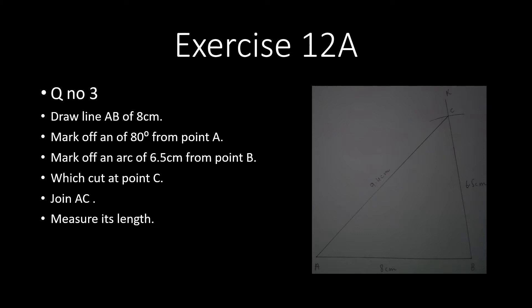Firstly, we have to draw a line AB of 8 centimeters. After drawing this line, we will draw an angle of 80 degrees at point B with the help of a protractor.